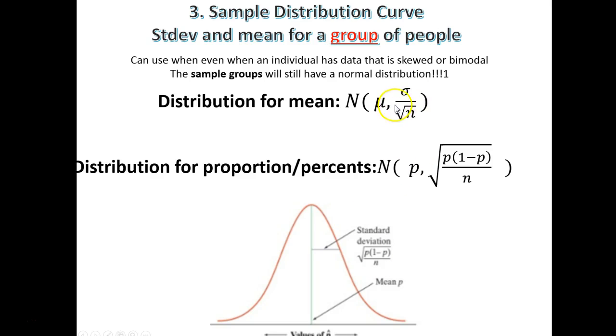So the standard deviation shrinks with a mean. If you're looking at means by square root of n, if it's yes/no questions and we're just looking at a percent, it's going to be this will be your standard deviation. But again, that curve, even though it's a group, is still going to look the same.